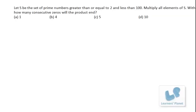Now let's solve this problem. Let S be the set of prime numbers greater than or equal to 2 and less than 100. Multiply all elements of S. With how many consecutive zeros will the product end?